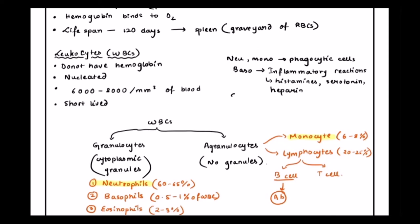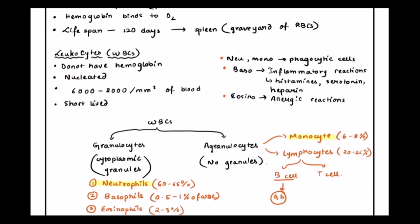Now, if we talk about eosinophils, eosinophils are present when there is any allergic reactions. Basophils, they are cells that cause inflammatory reactions by releasing molecules like histamine, serotonin, and heparin. Finally, eosinophils, they are responsible for allergic reactions.